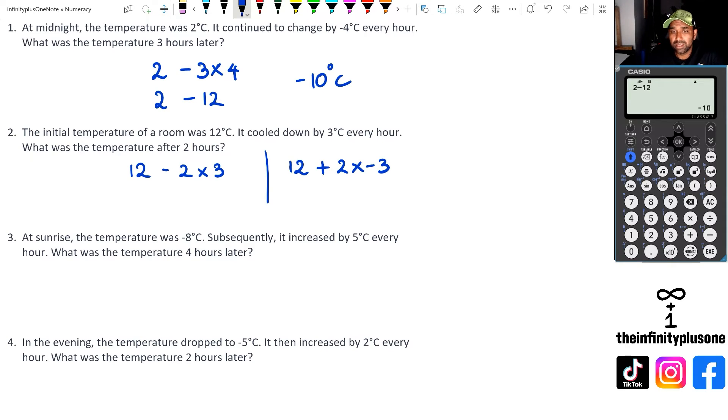Either way you do it, you're actually going to end up with the same answer. Let's try it out. We're going to go 12 and we're going to go 12 minus 2 times 3, that's equal to 6 degrees.